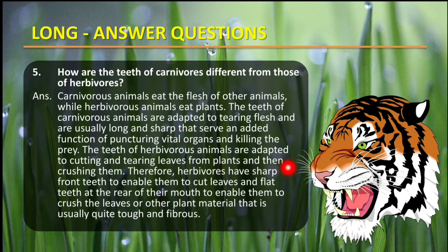The teeth of herbivore animals are adapted to cutting and tearing leaves from plants and then crushing them. Therefore, herbivores have sharp front teeth to enable them to cut leaves, and flat teeth at the rear of the mouth to enable them to crush leaves or other plant material that is usually quite tough and fibrous.